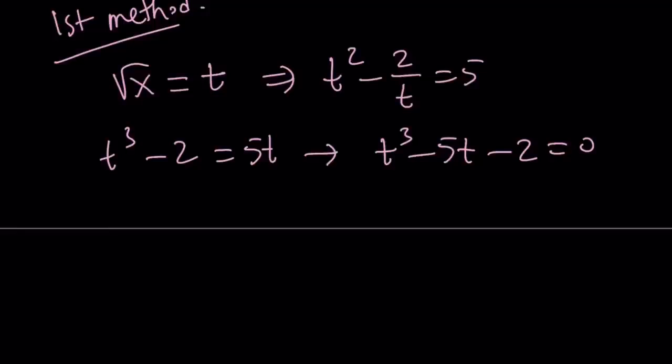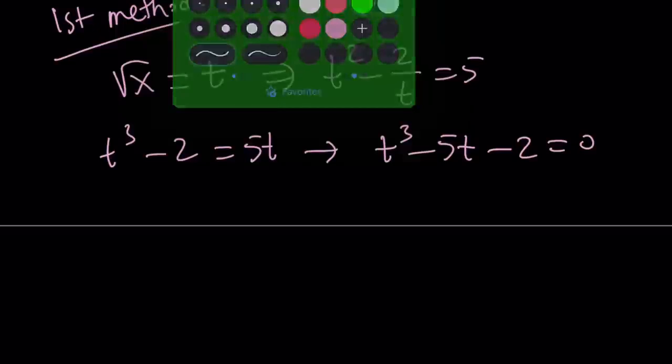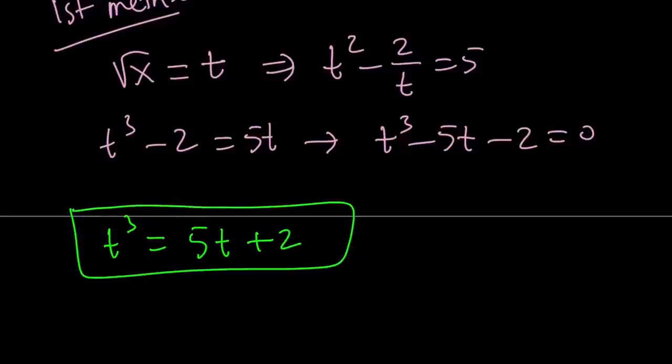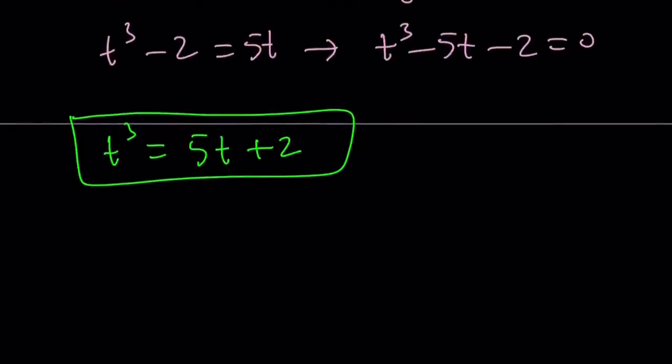Now, if you wanted to solve this as a cubic equation using the cubic formula or whatever else, that will be the third method. So I briefly talked about it and I can continue with the first one. The first method proceeds as follows. We're going to isolate t cubed and write it as 5t plus 2. So we're going to take advantage of polynomials here, polynomial powers.